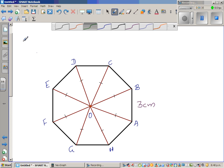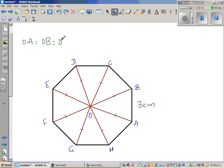So how can we write that? We can write as OA is equal to OB is equal to OC is equal to OH. All the sides are equal.